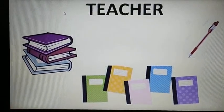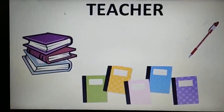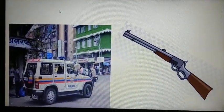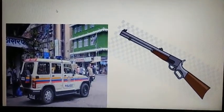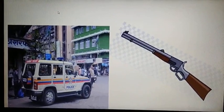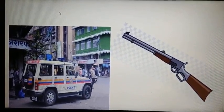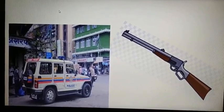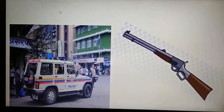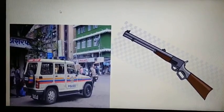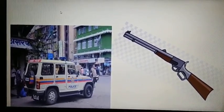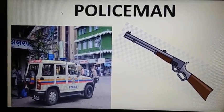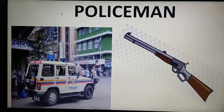Teacher! Very good. Let's move on to the next slide. Which community helper uses this? It is a rifle you can see, and you can see a van also. So which community helper? Yes, you are right — we are talking about the policeman. You can see 'policeman' is written here.